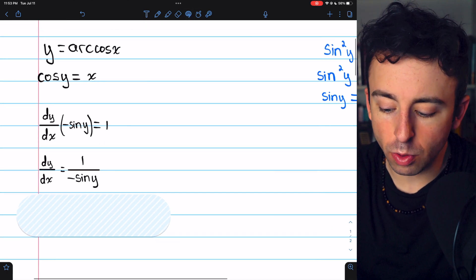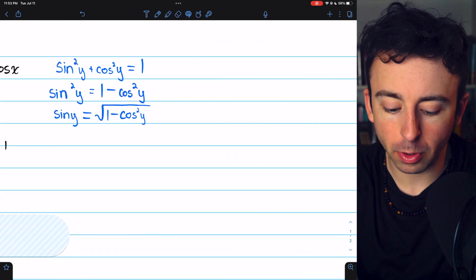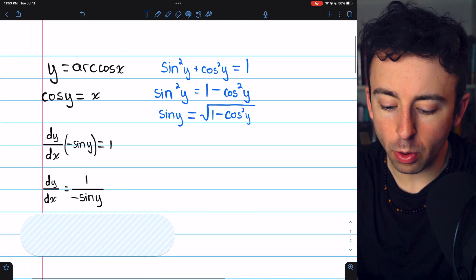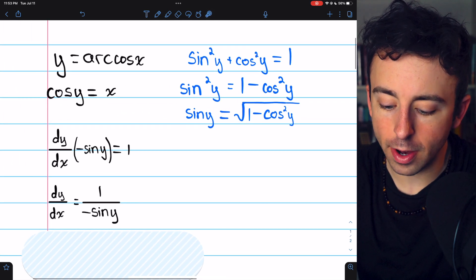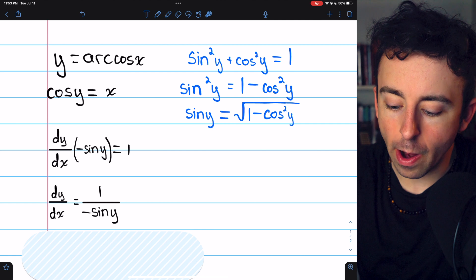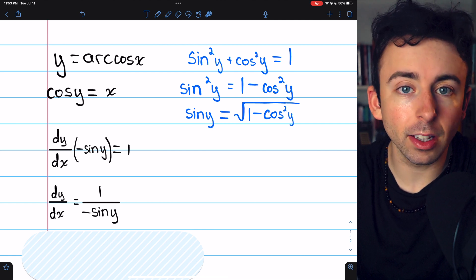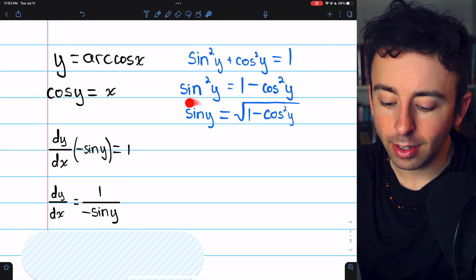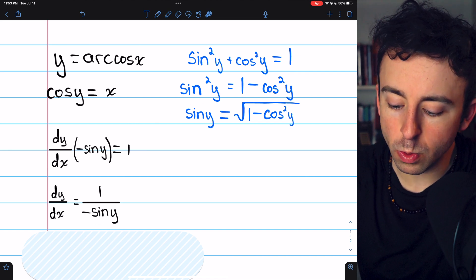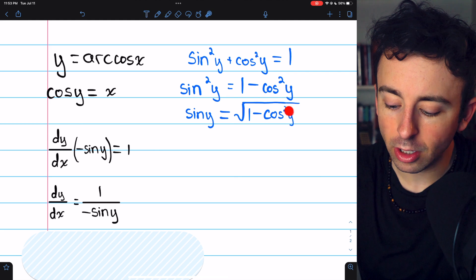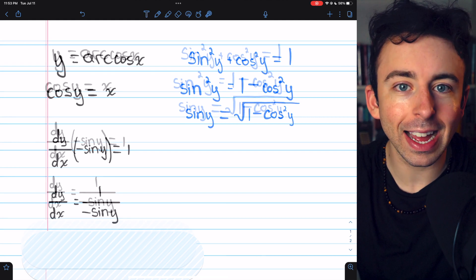We can do this using the Pythagorean identity. As you probably recall, sine squared plus cosine squared equals 1, but that means sine squared equals 1 minus cosine squared. Then, taking the square root of both sides, sine of y must equal the square root of 1 minus cosine squared of y.